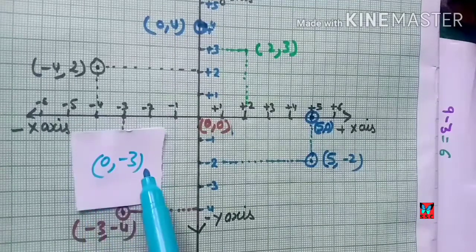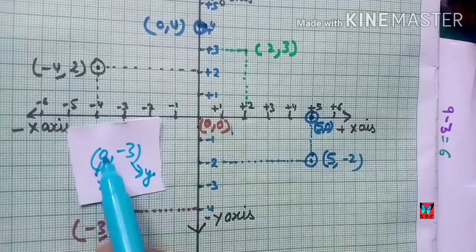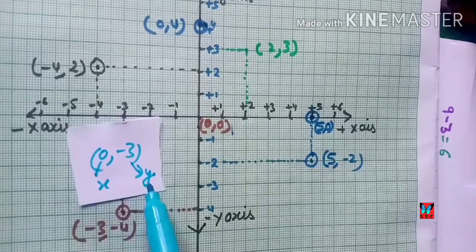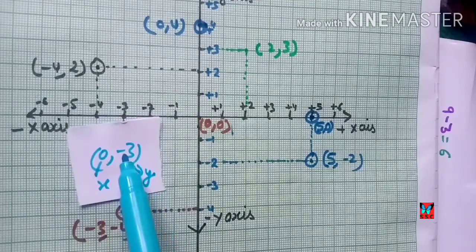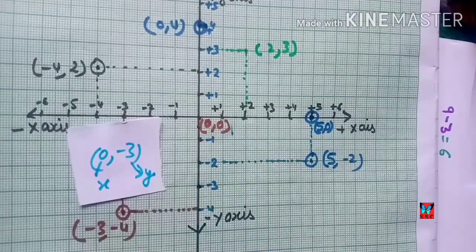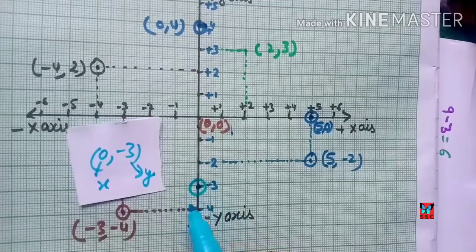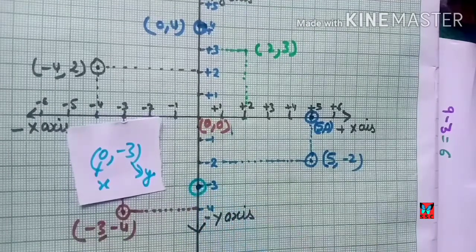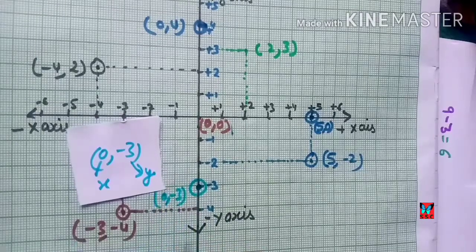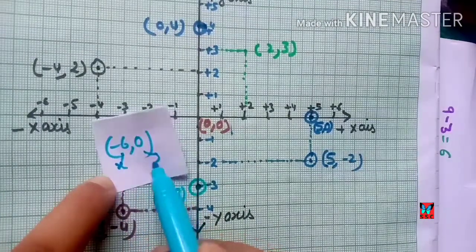Now let's plot the point (0, -3). The x-coordinate is 0 and y-coordinate is -3. Since one coordinate is 0, the point lies on an axis. Because x = 0, the point lies on the y-axis. Going downward on the negative y-axis to -3, this point (0, -3) is on the y-axis at minus 3.